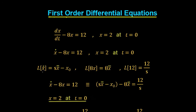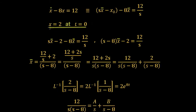We substitute these values into the equation. So x-dot minus 8x equals 12 becomes s·X-bar minus x₀ minus 8·X-bar equals 12/s. Now we add in the initial conditions: at t equals 0, x equals 2. So x₀ is simply 2, giving us s·X-bar minus 2 minus 8·X-bar equals 12/s.